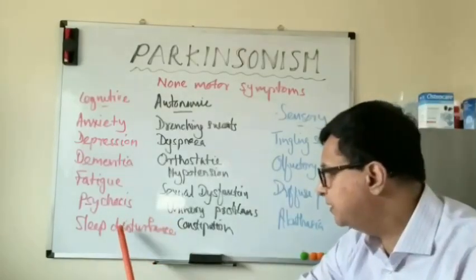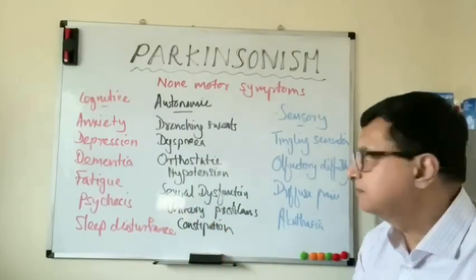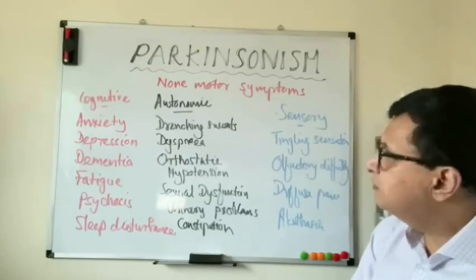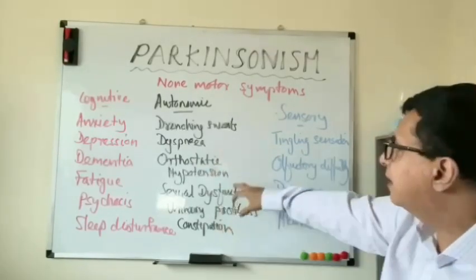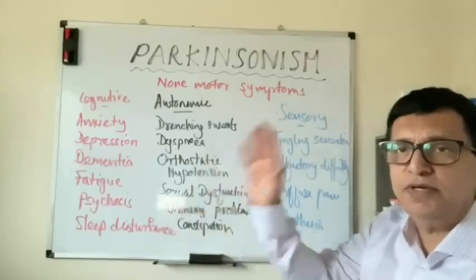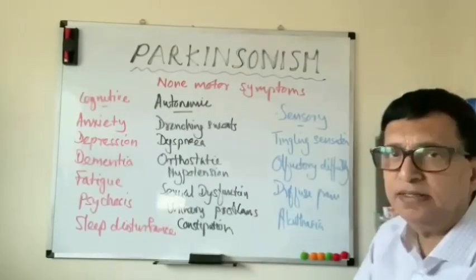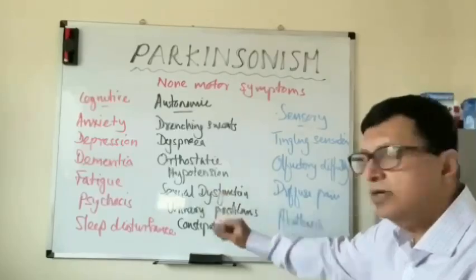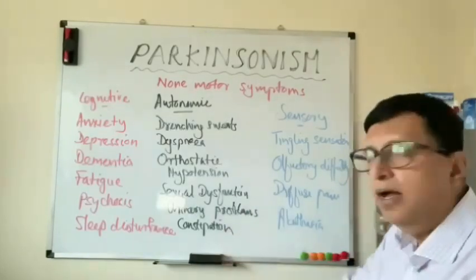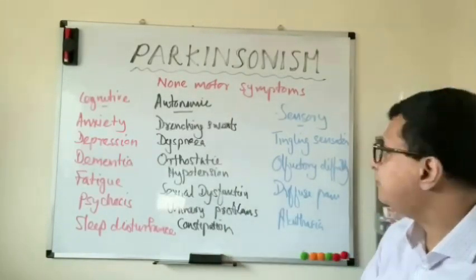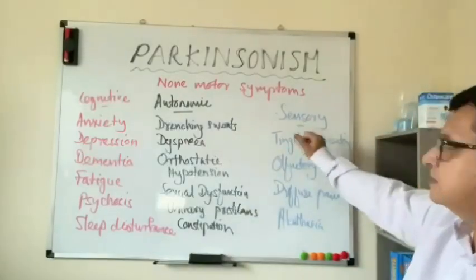Sleep disturbances are very early symptoms of Parkinsonism, as mentioned before. Autonomic symptoms include drenching sweats, dysphagia, and orthostatic hypotension — meaning when they change position their blood pressure cannot be maintained and it drops, resulting in falls. There is also sexual dysfunction, urinary problems due to autonomic nervous system issues, and constipation, which is also a very early feature of Parkinsonism.